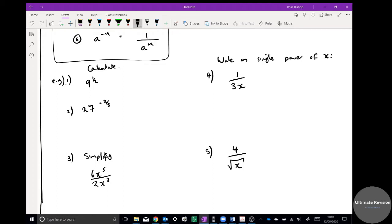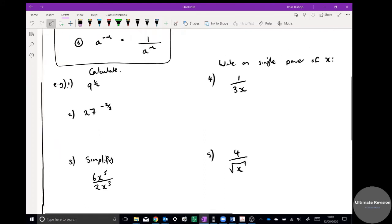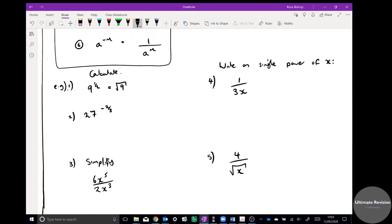I'm just going to go through the answers now. So nine to the half - half means square root, so that's the square root of nine, which is simply three. By definition, to the power of a half only means the positive square root, so you wouldn't include minus three for that example.